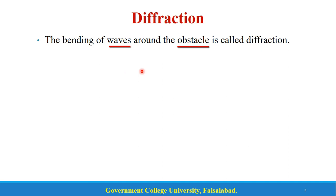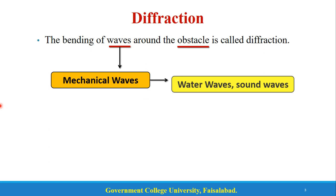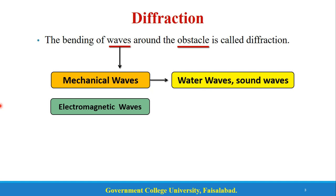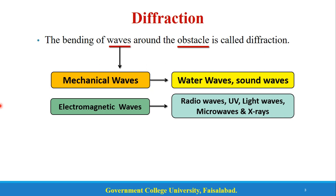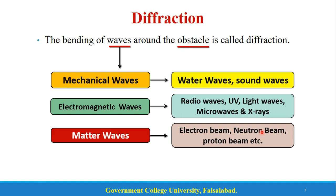We have many types of waves, just like mechanical waves, water waves, sound waves. Similarly we have electromagnetic waves, and in these we have radio waves, UV waves, light waves, ultraviolet waves, microwave waves. We are also able to study matter waves, so matter waves can also undergo diffraction — like electron beam, neutron beam, electron, proton — if they move, they carry the matter waves.